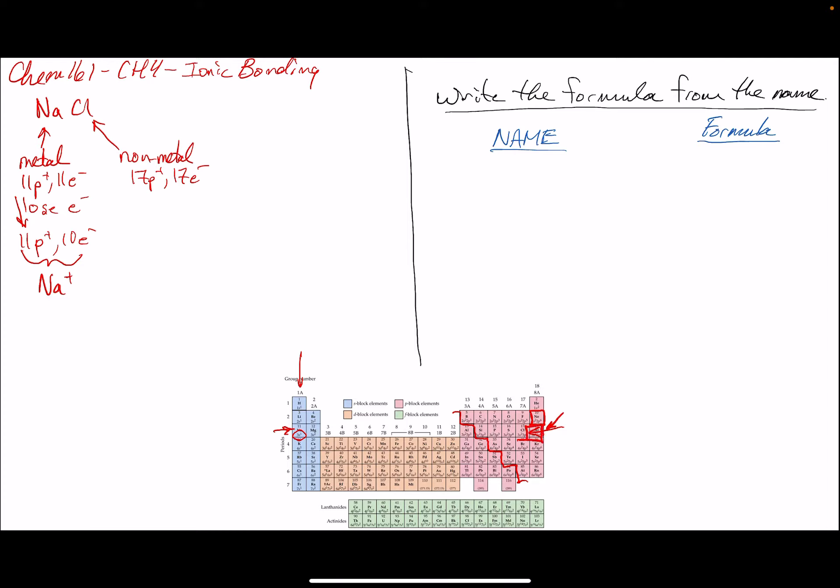So that's how we complete the octet. So this element, as we saw, wants to gain 1 electron. And that will make it 17 protons and 18 electrons. So this now sums up to give negative, and so this becomes chloride.